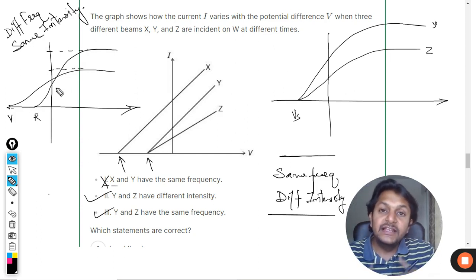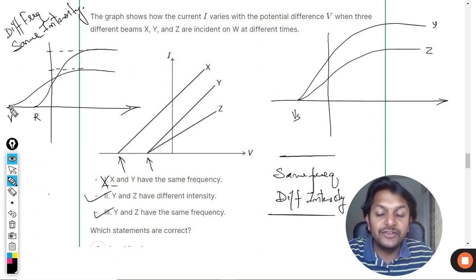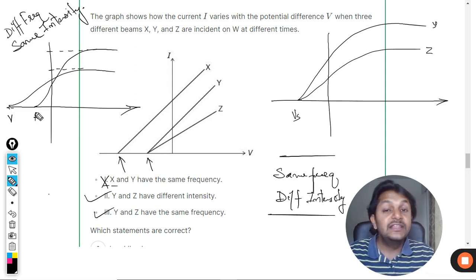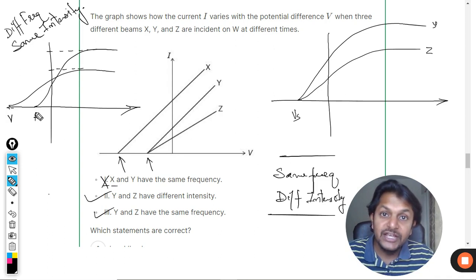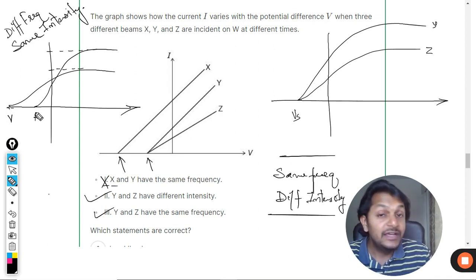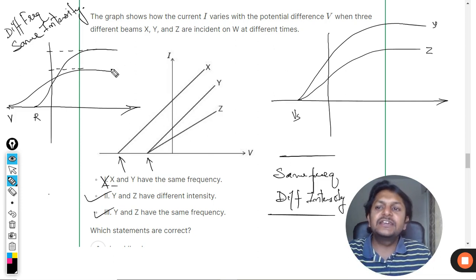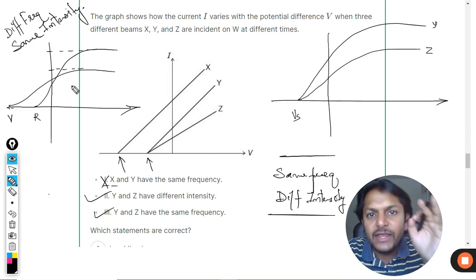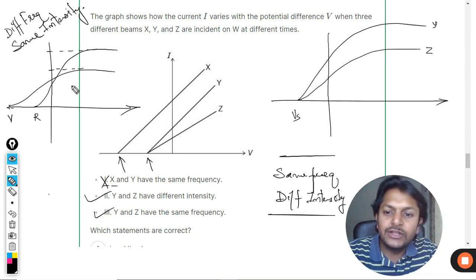But in the case of violet, the electrons are moving with a higher kinetic energy. In the case of red, they are moving with lesser kinetic energy, but there are more number of electrons, and that is why there is more current in the case of red.